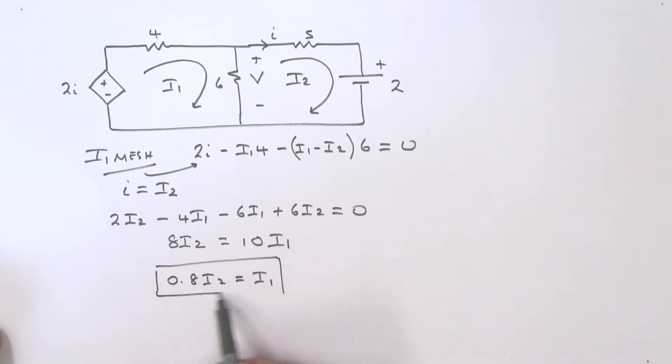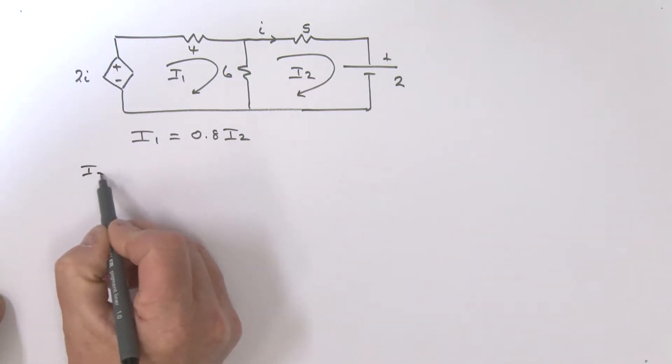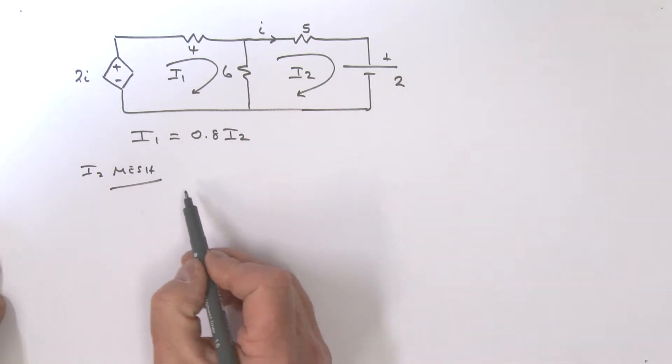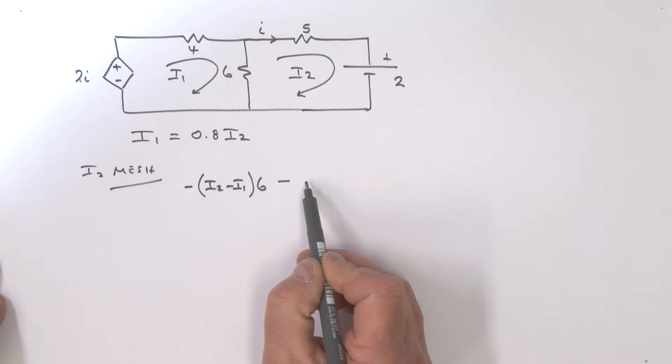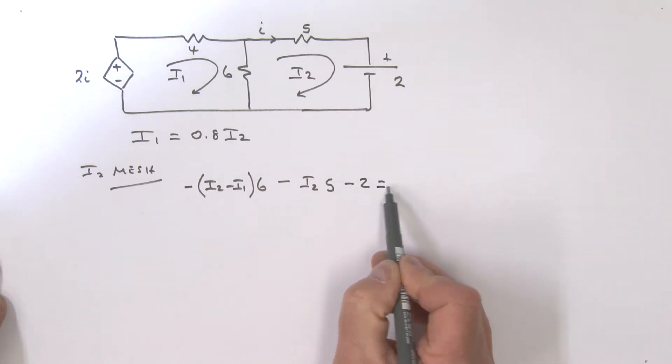Now let's work on the I2 mesh. Going in this direction, what do we have? We have a minus, open a bracket, I2 minus I1, that's times 6, and then going around we have a minus I2 times 5, and then a drop here minus 2, all equals zero.